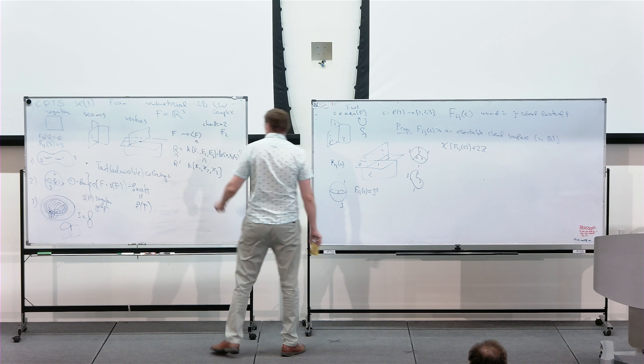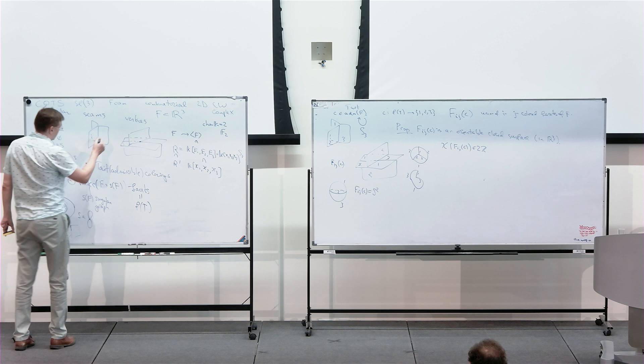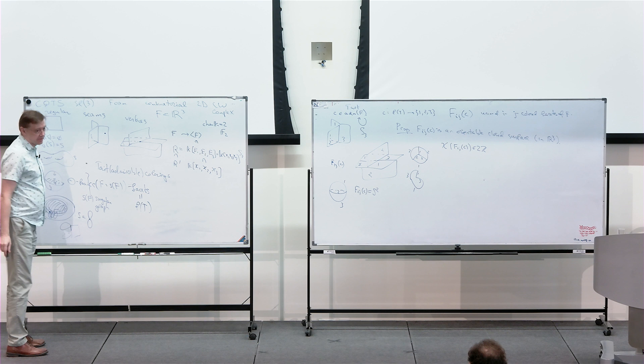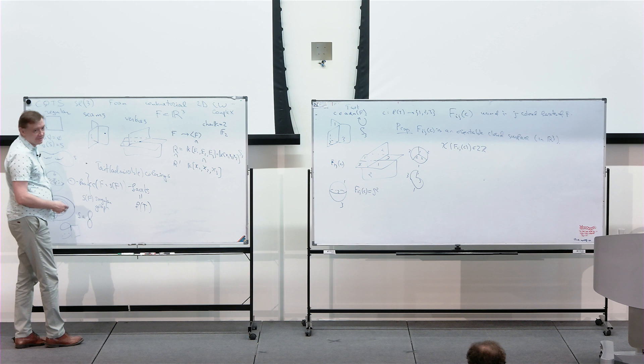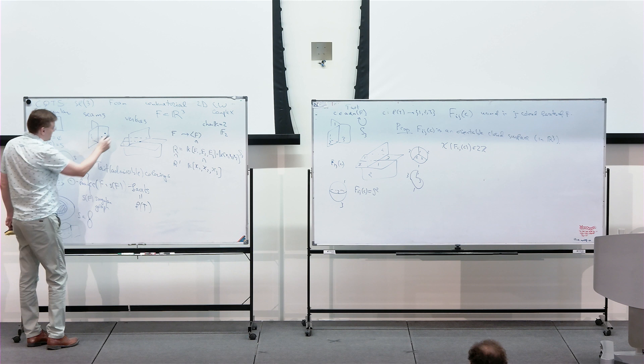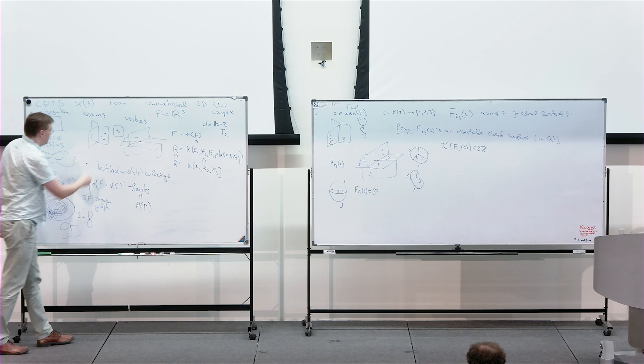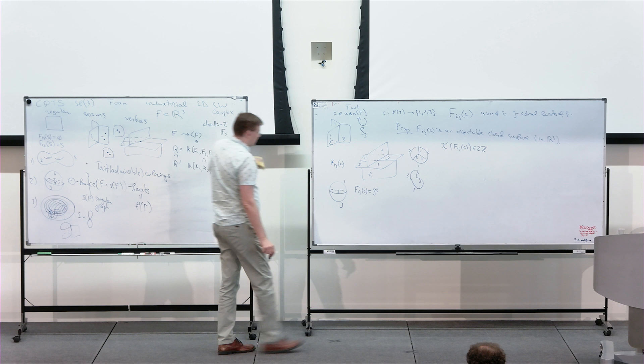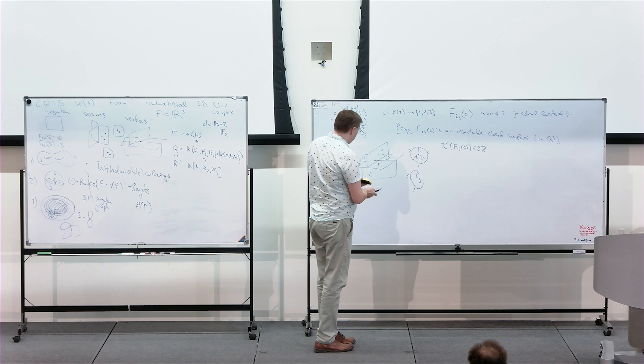When computing this invariant, it's convenient to extend foams and allow dots to float on facets — dots are like observables. If you have several dots floating on a facet, you can draw them as a single dot with weight equal to the number of dots. So our foams are possibly enhanced with these dots.